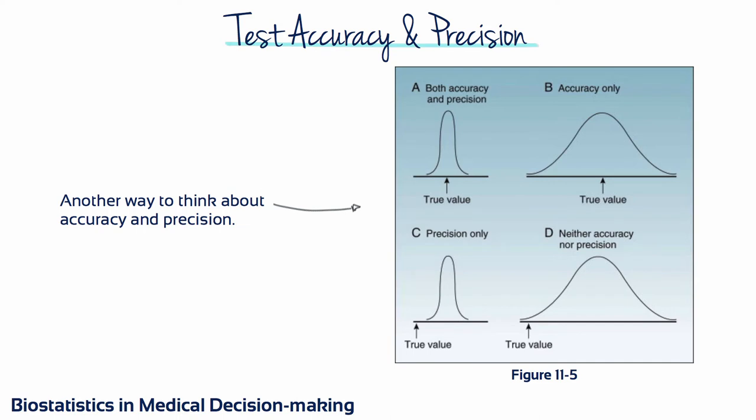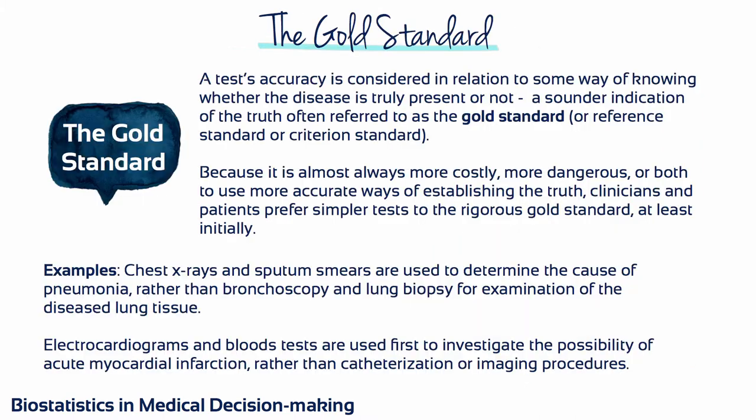Another way to think about accuracy and precision is by looking at distribution curves. The test is accurate if the true value is at the peak of the curve. The test is precise if the curve is pointy and there is little spread. A test's accuracy is considered in relation to some way of knowing whether the disease is truly present — often referred to as the gold standard, reference standard, or criterion standard.